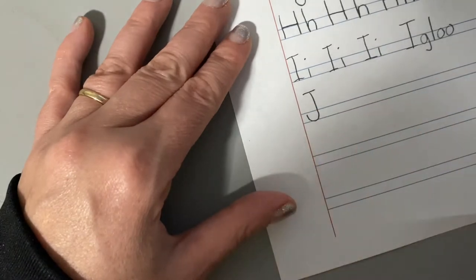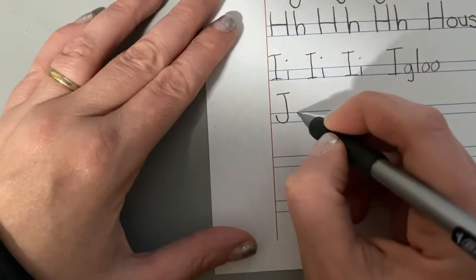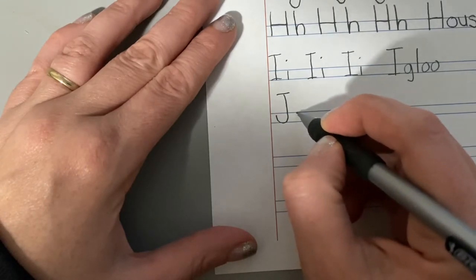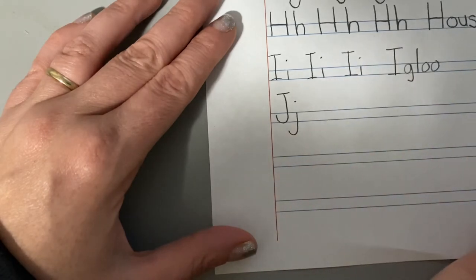Jump up and put a little line at the top and lowercase J is the same thing just set down underneath the line. So line down with a curve at the bottom and then we put a dot at the top for lowercase.